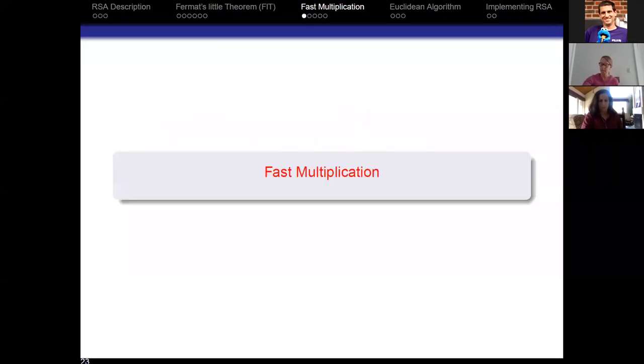Welcome back. My name is Steve Miller. I'm a professor at Williams College and we are continuing the teachers and scholars lectures on cryptography and RSA, and we're now shifting to fast multiplication.